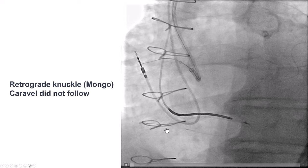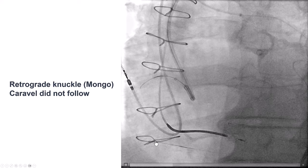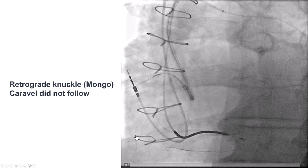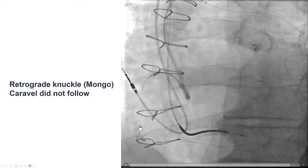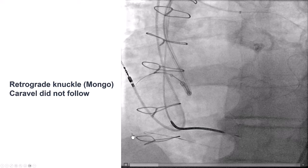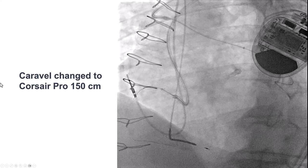We did try to knuckle a Mongo wire retrogradely. However, the Caravel microcatheter could not follow distally — the Caravel is not a very supportive microcatheter. There is a lot of calcium and tortuosity, which makes it hard to advance the knuckle further up into the distal and mid-RCA. So we decided to change the microcatheter and inserted a Corsair Pro 150 centimeters.